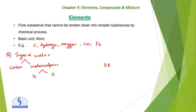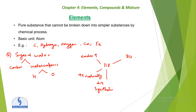We now have 118 elements in total. There are 94 naturally occurring elements and 24 synthetic elements. Out of 118, 80 elements have at least one stable isotope, and 38 elements have radioactive isotopes.